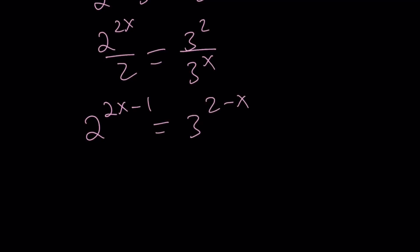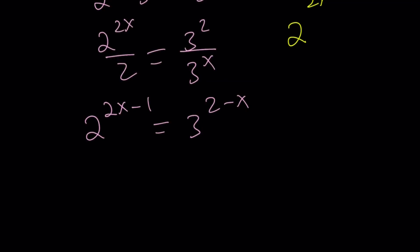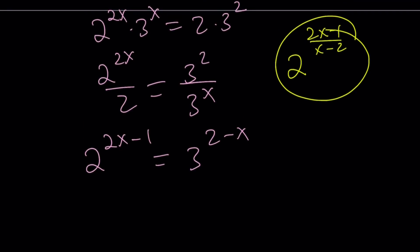hopefully you do. So this is what I get by using the properties of exponents. And then now here's the really cool part. Remember, I'm trying to evaluate this expression 2 to the power 2x minus 1 divided by x minus 2. And you have 2 to the power 2x minus 1. So it would only make sense if you raise both sides to the power 1 over x minus 2.